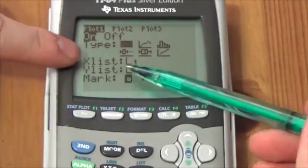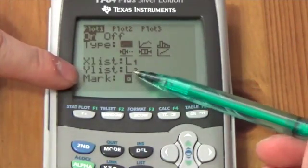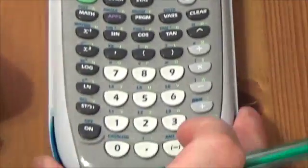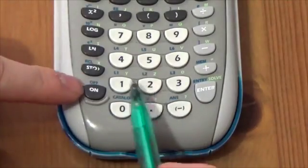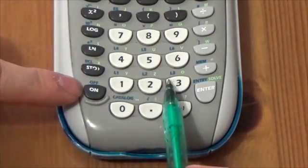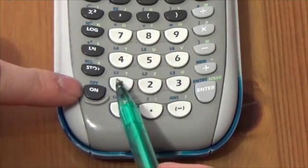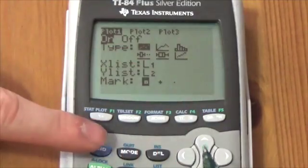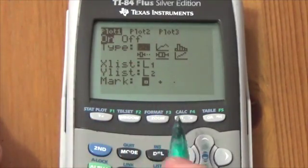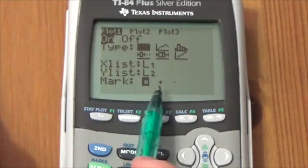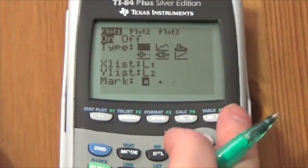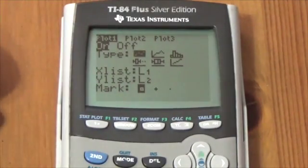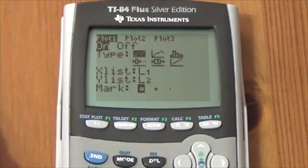I want to make sure that my x list is list one, my y list is list two. Those can be whatever lists I enter there. If you're wondering where those L1, L2 come from, they are just above the buttons one, two, three. You can see four, five, six. List one, list two, list three. If I needed to change that, I could simply do second one, second two, whatever. And then finally, I have a choice of three different marks that I can use on my graph. So the calculator is now set up to create a scatter plot. It's going to look at the statistical information and plot those points here.